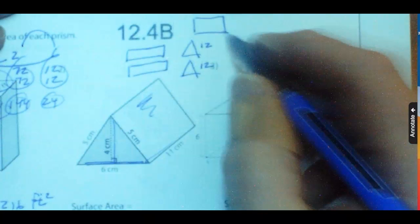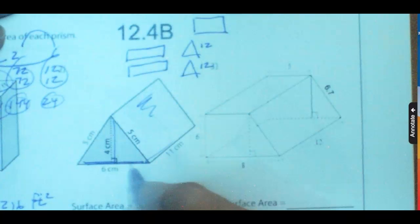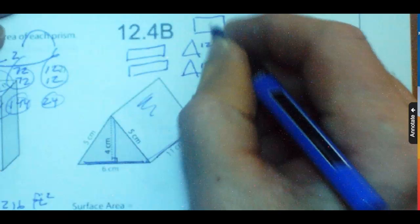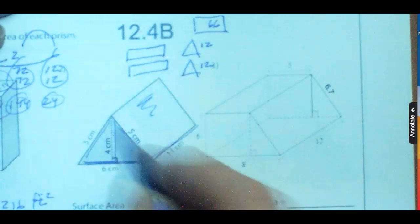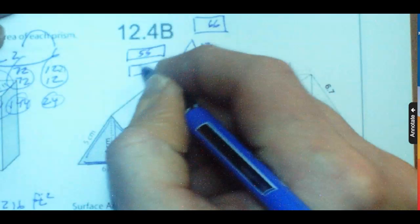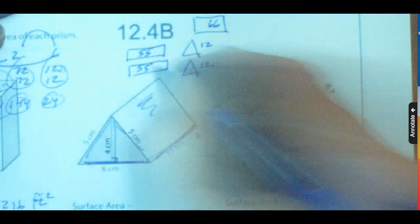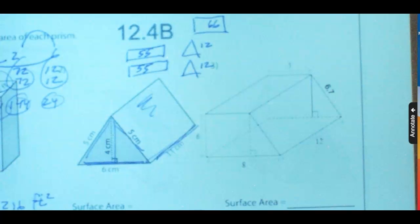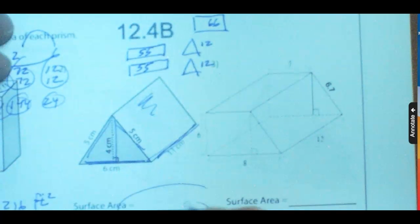Okay. This bottom is going to be a rectangle. It's going to be 6 times 11. So this would be 66. And then these ones on the side, they're both 5 times 11. So these would be 55. Now you just add all of those numbers together, and that's going to be your total surface area. And that's going to be in centimeters squared.